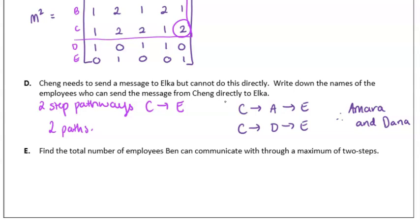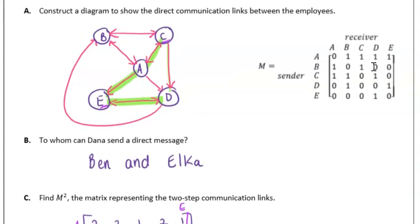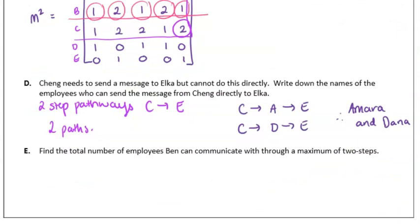Part E: find the total number of employees that Ben can communicate with through a maximum of two steps. If we look at the two-step matrix that we have here just above and we concentrate this time on Ben, according to this, Ben can talk to Amara, himself, to Cheng, to Dana, and to Alka, all via two steps. We don't even need to go back and consider the one-step matrix. In total, we can see he can communicate with every other person, which means he can communicate with four of the employees.